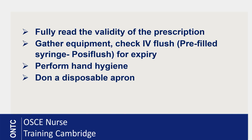The normal saline is provided as a pre-filled syringe, called a Possi flush. Before using it, check the validity of the prescription — read the patient name, ID details, allergies, the name of the IV flush, the time it is due, and the prescriber's signature. IV flush is a medicine, so a valid prescription is essential.